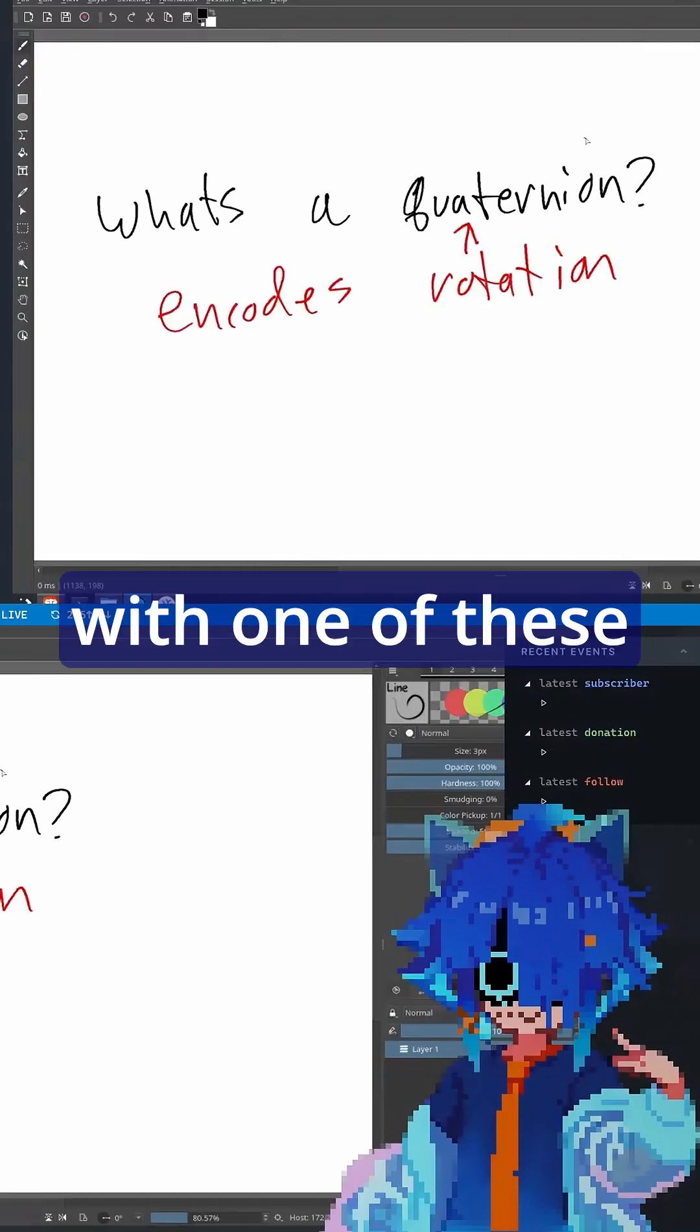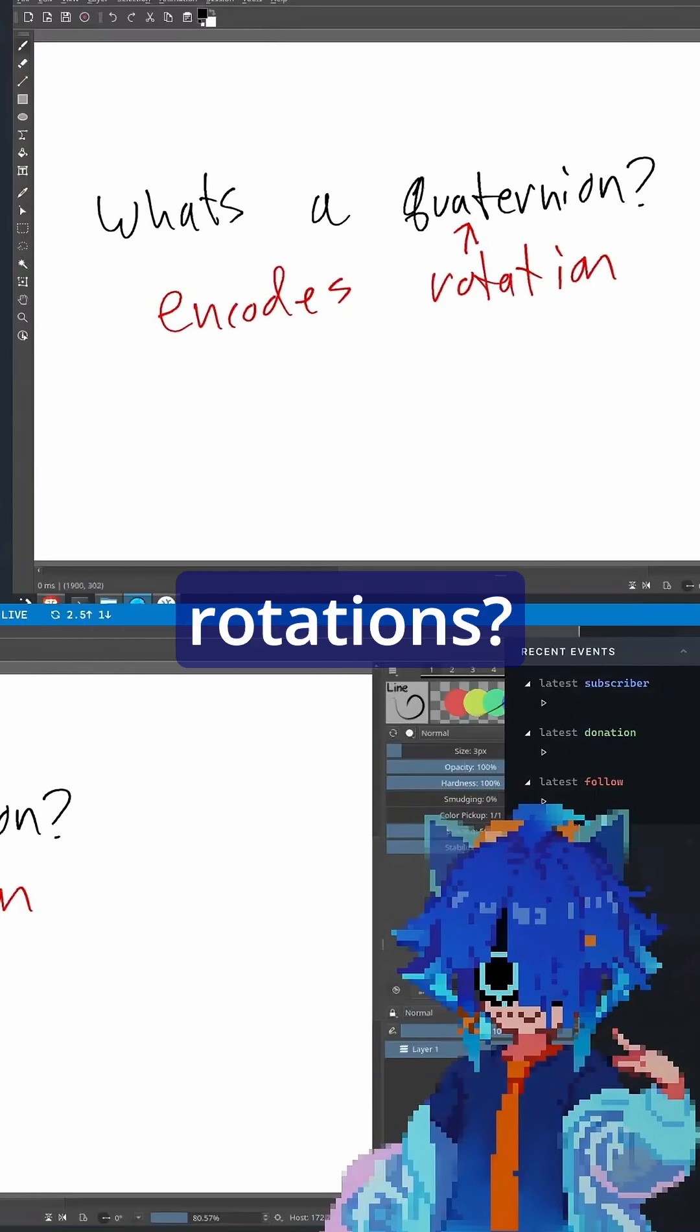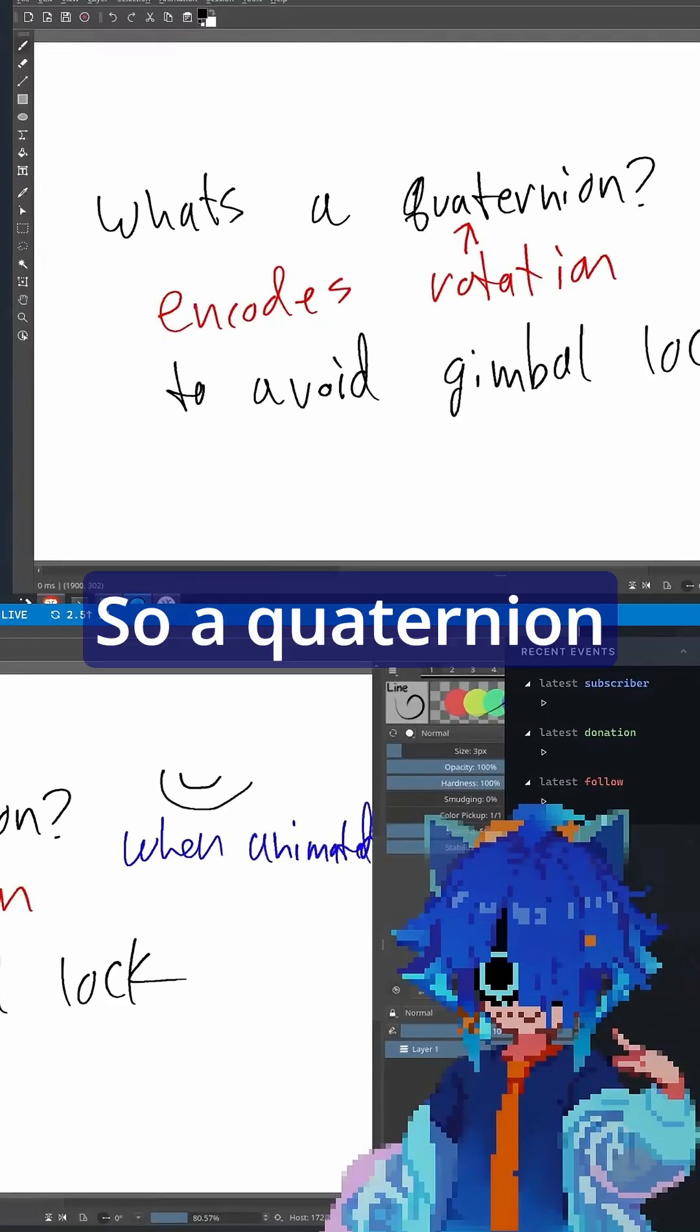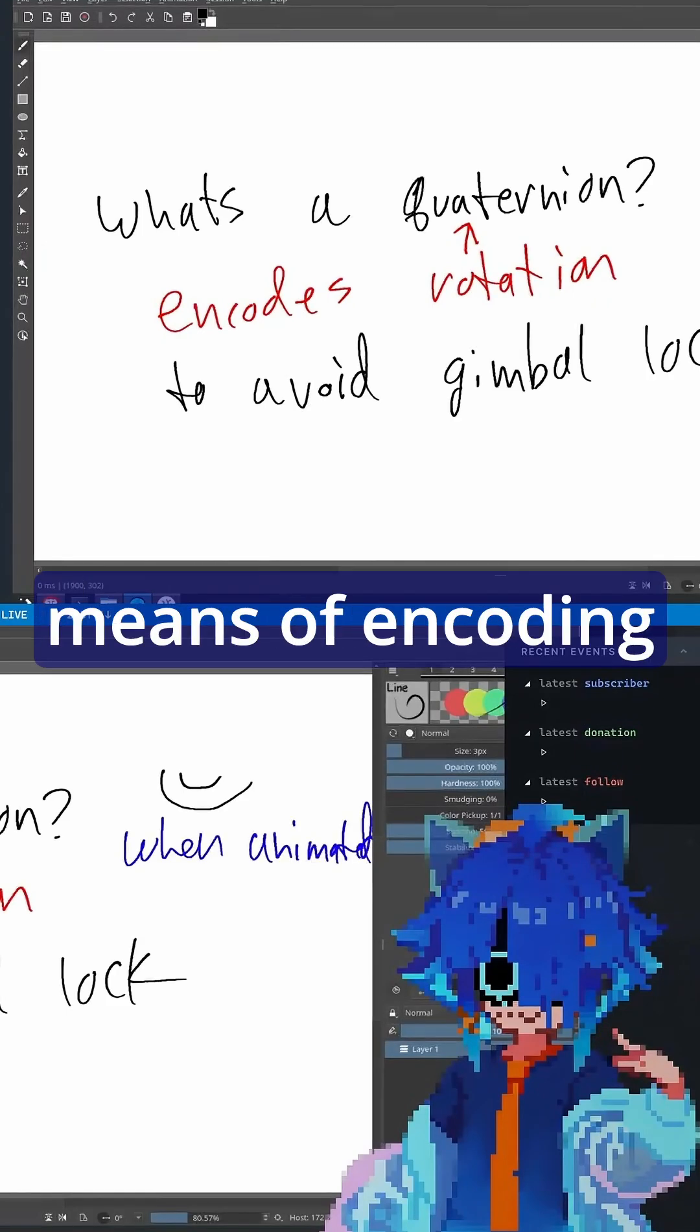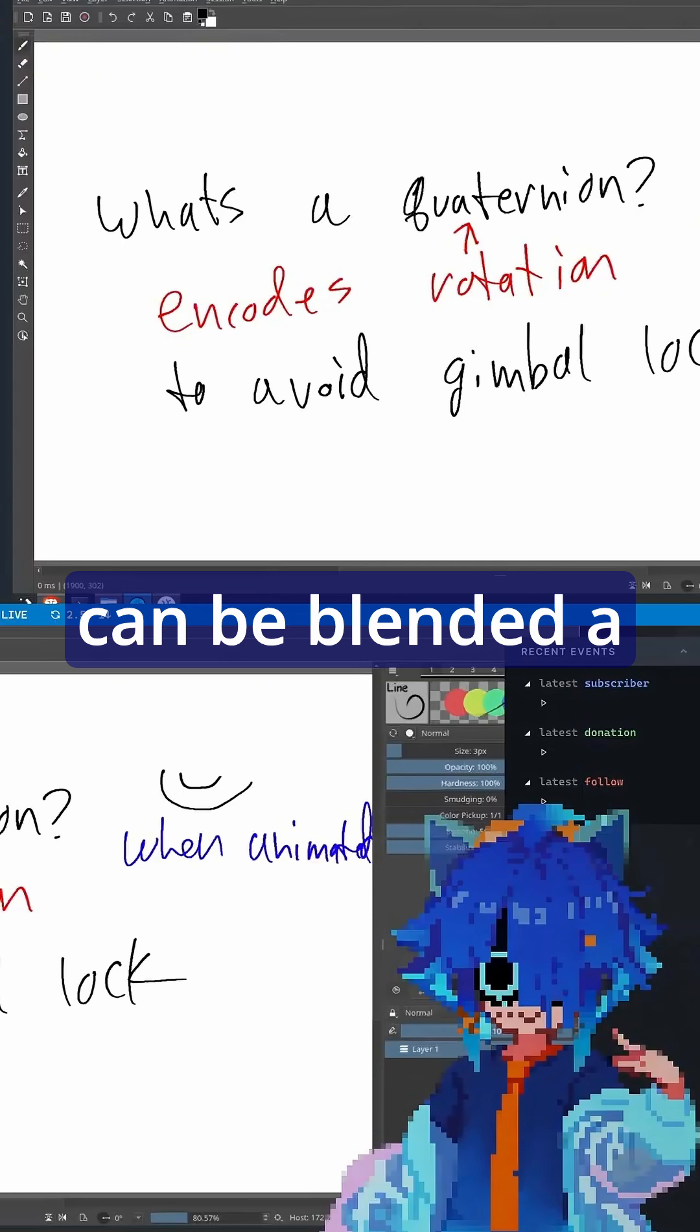So what do we do with one of these encoded rotations? They're a method of encoding rotation to avoid gimbal lock. A quaternion is an alternative means of encoding an animation that can be blended a little bit better.